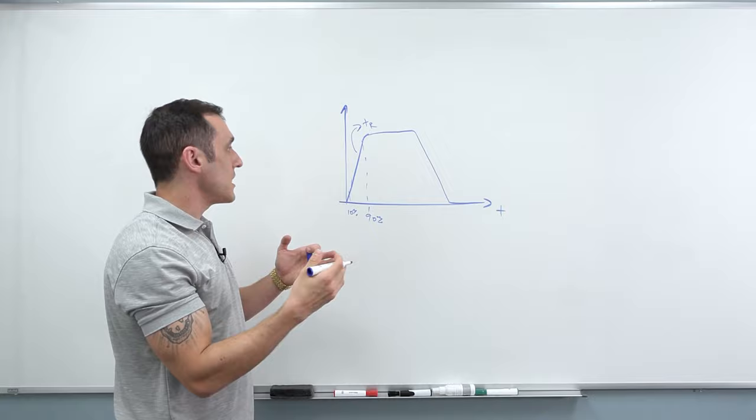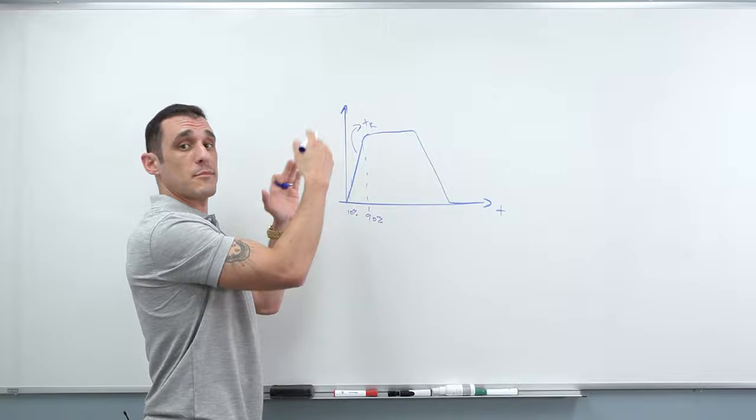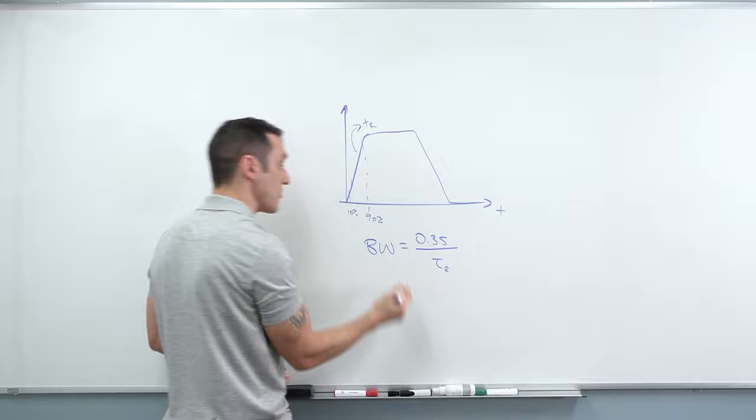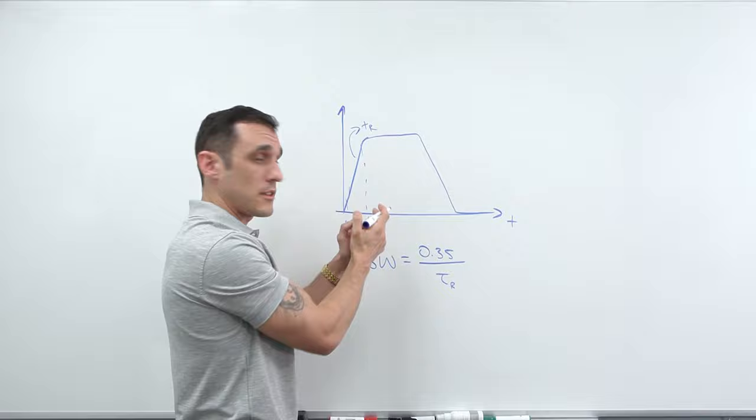this quantity here, this rise time is actually going to limit my ability to actually reproduce this signal when I measure it. So this is something that I brought up in a previous video where you will sometimes see the bandwidth quoted as BW equals 0.35 divided by T sub R, this rise time, this 90-10 rise time.